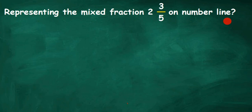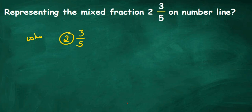Whenever you have a mixed fraction, you have a whole part and a fractional part. In 2 3/5, the 2 will become the whole part and 3/5 will become the fractional part. Now there are two types of fractions — when you have a whole number in the fraction like this.